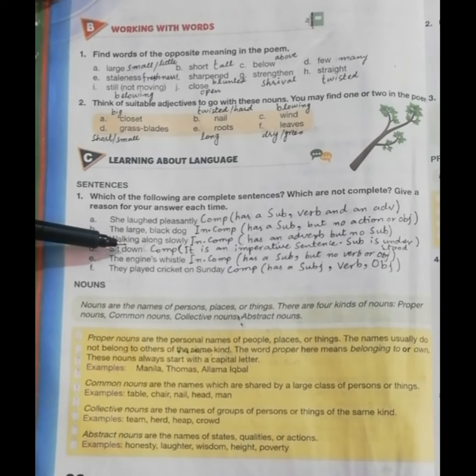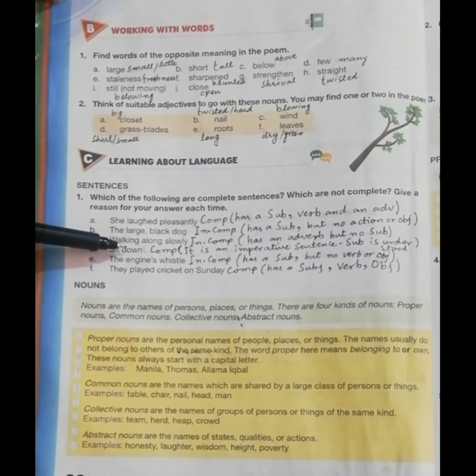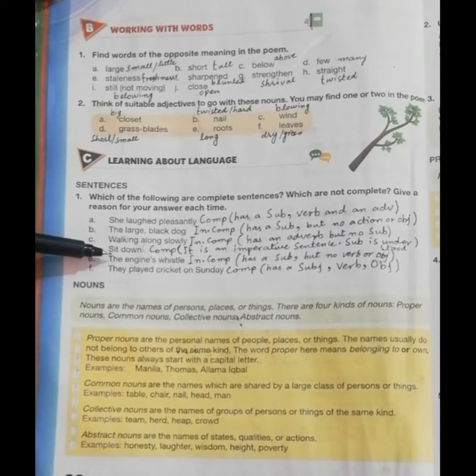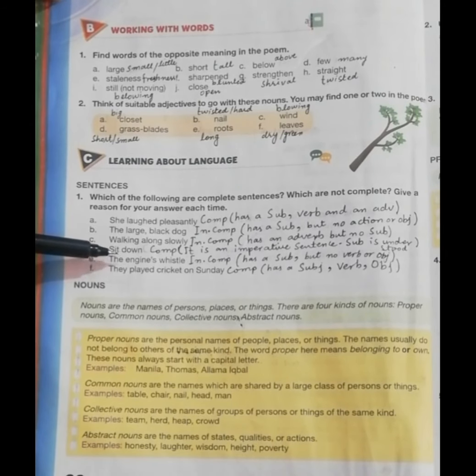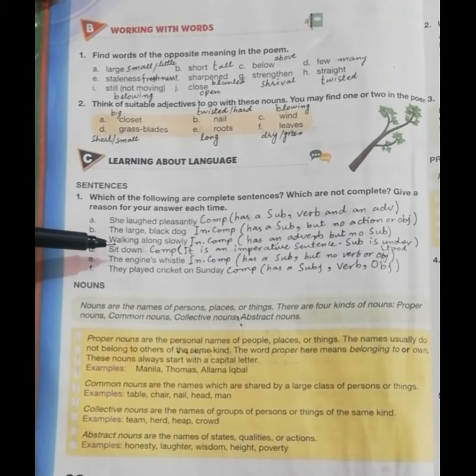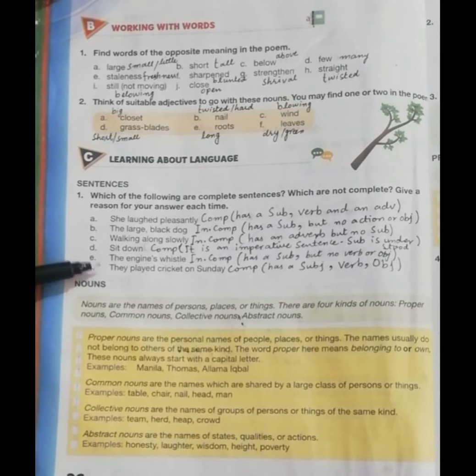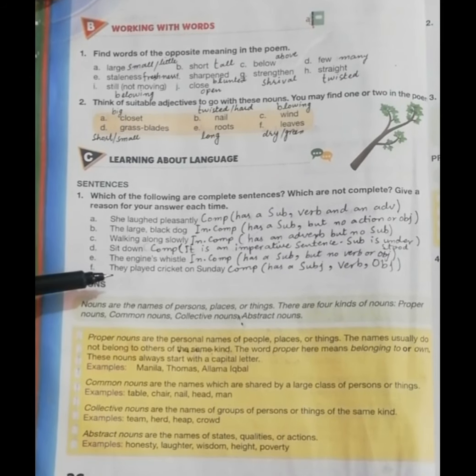The next one is 'The engine's whistle.' This sentence is incomplete because it has a subject but no verb, no action, or object. The next sentence is 'They played cricket on Saturday and Sunday.' This sentence is complete as it has a subject, verb, and object — subject and predicate are both present.